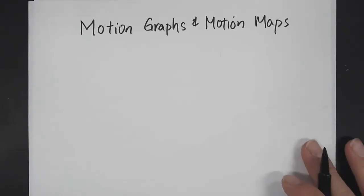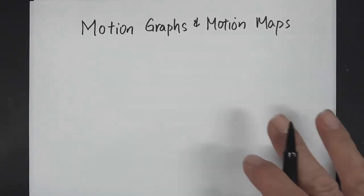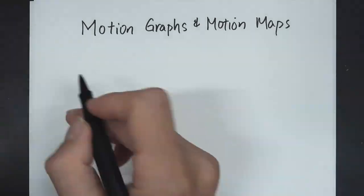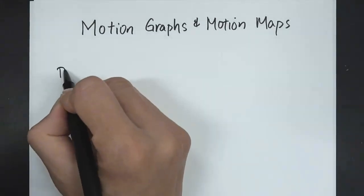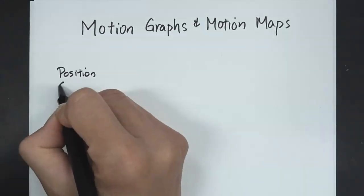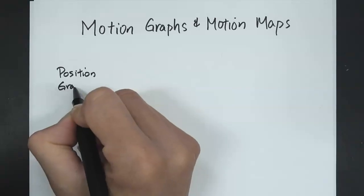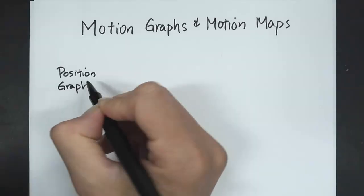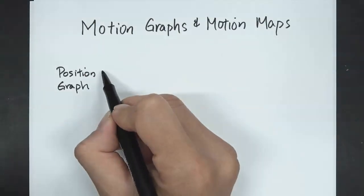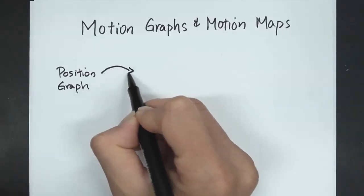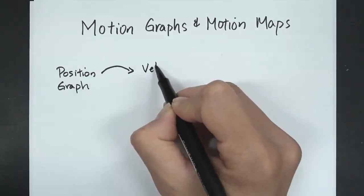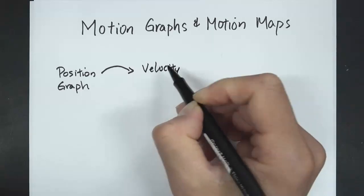In this video we're going to cover motion graphs and motion maps. We're going to start with a position graph. On a position graph, the slope tells you the velocity of the object.